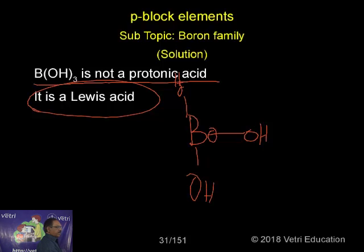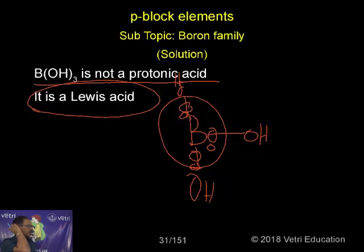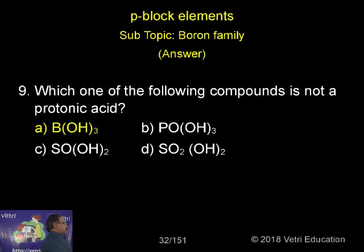There is one electron from each bond, so for three covalent bonds the center boron has six bond-pair electrons total. This means boron is electron deficient, making B(OH)₃ a Lewis acid. So this is the correct answer.